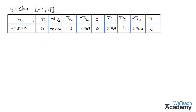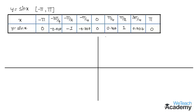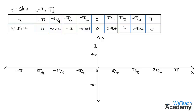Now let us plot all these points on a coordinate plane and by joining them we get the curve of sine x in the interval minus pi to pi. Let us draw a coordinate plane with the vertical line as the y-axis and the horizontal line as the x-axis. On the positive x-axis we mark pi by 4, pi by 2, 3pi by 4, and pi. On the negative x-axis we mark minus pi by 4, minus pi by 2, minus 3pi by 4, and minus pi. On the y-axis we mark 0.7 and 1, and on the negative y-axis minus 0.7 and minus 1.